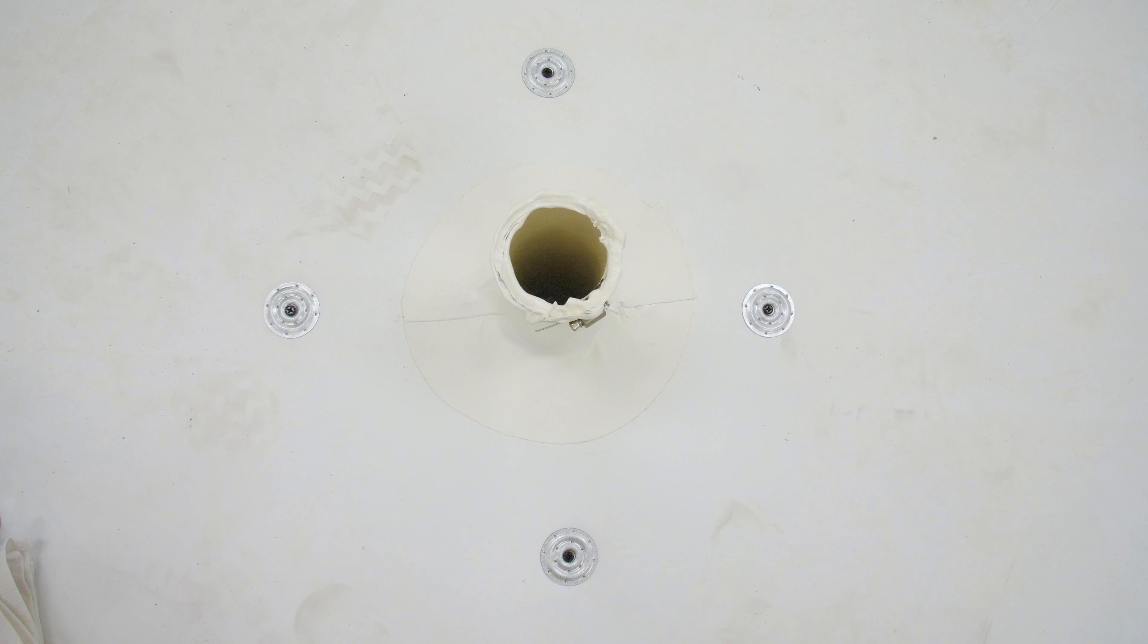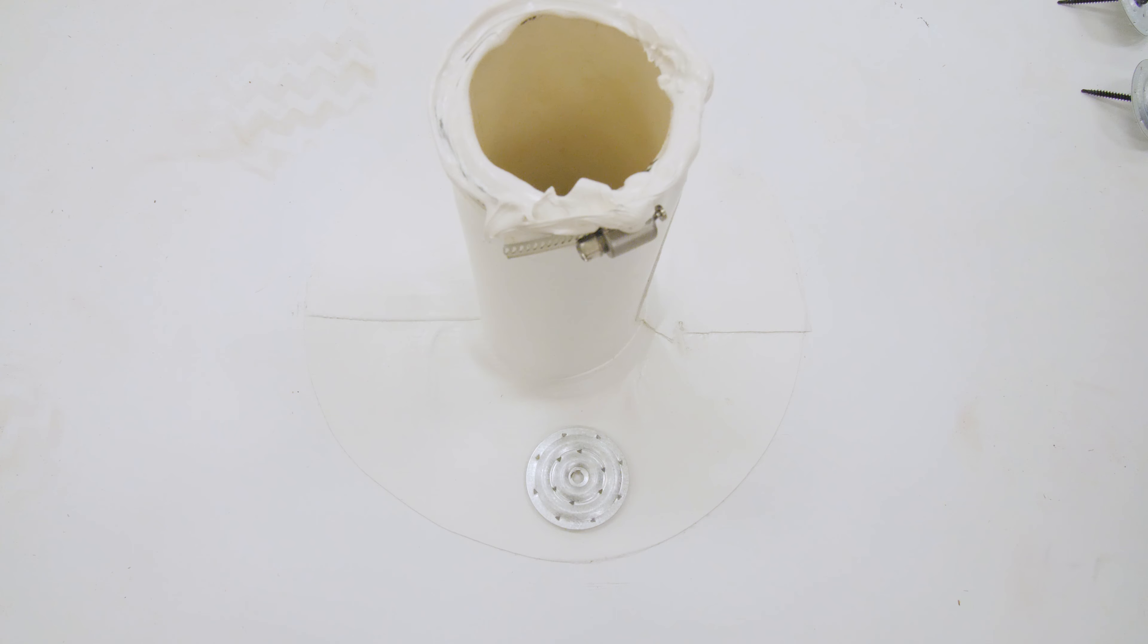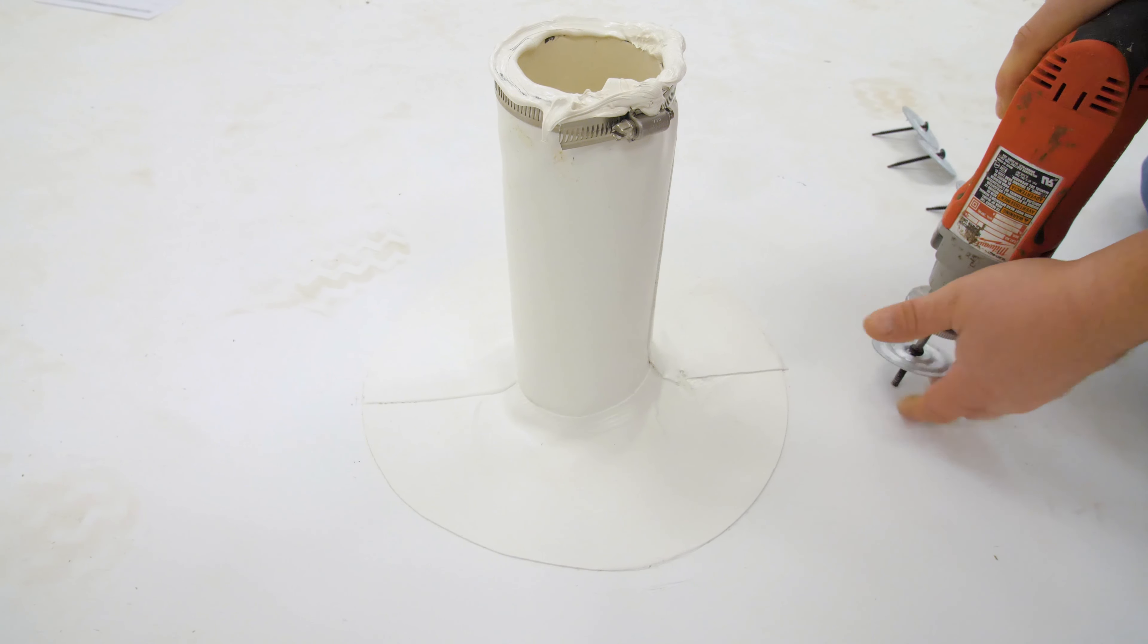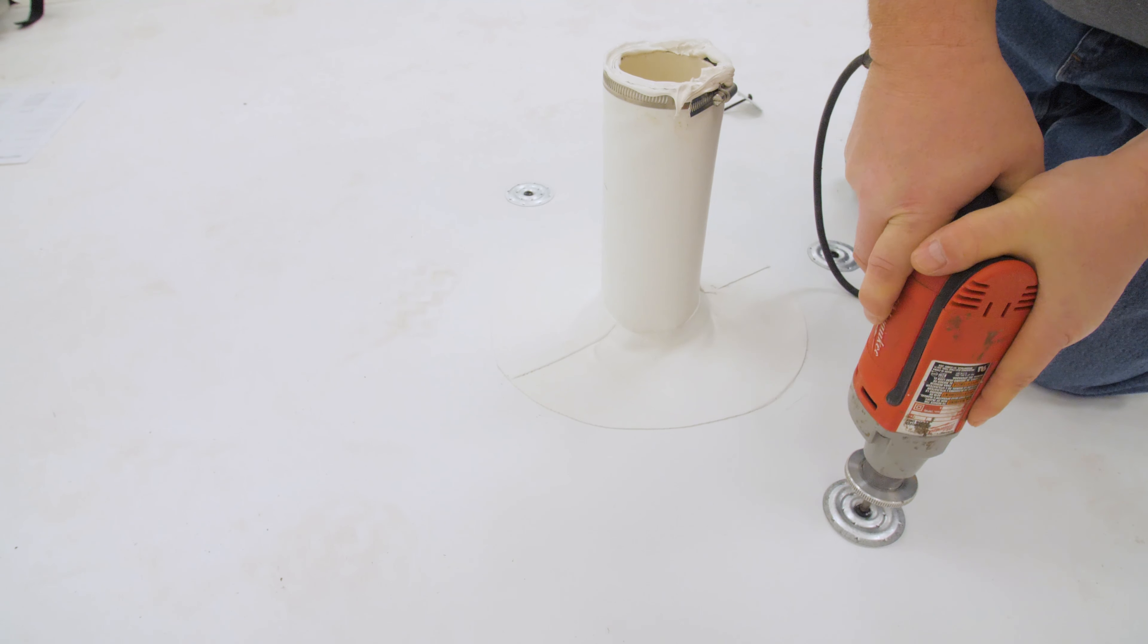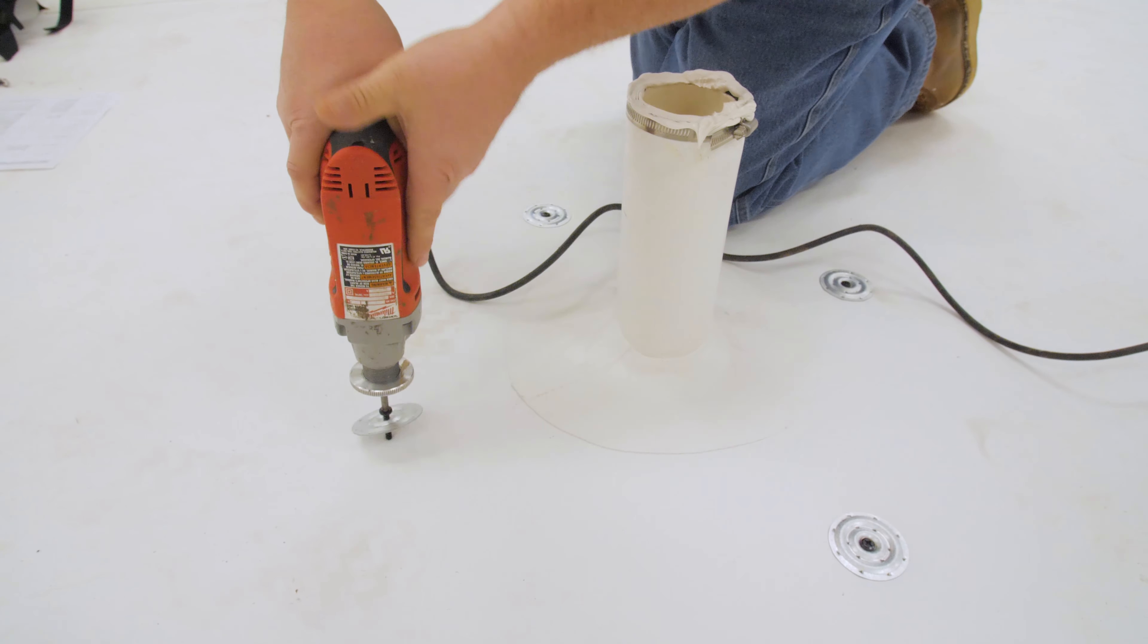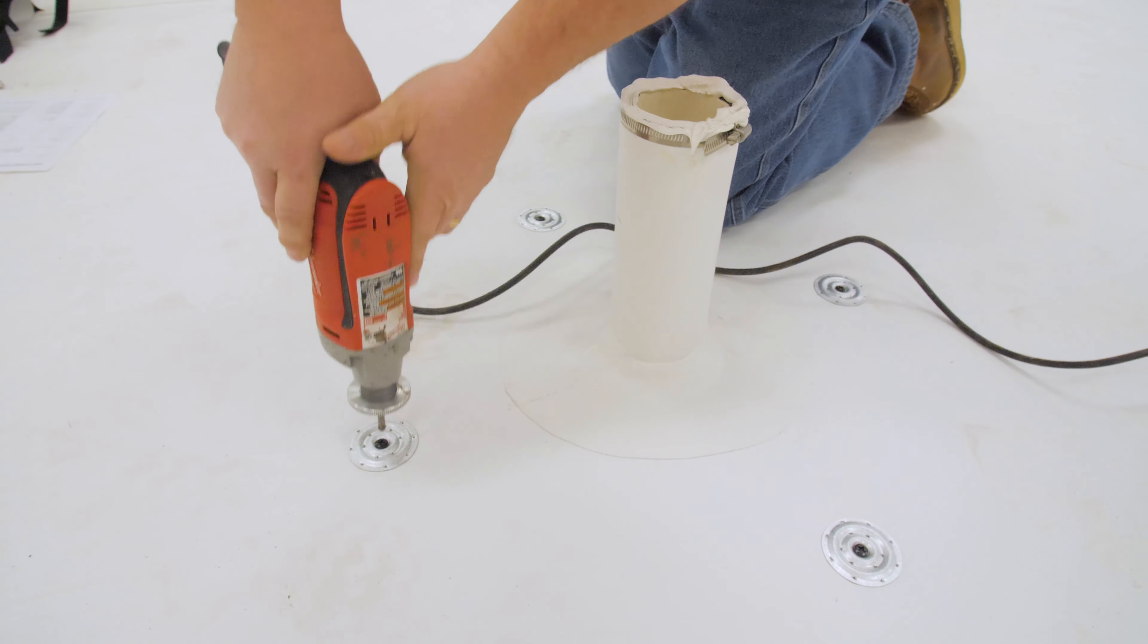Base attachment is required at all split pipe boots on mechanically attached systems. The base flange is not wide enough to allow installation of the plates and fasteners next to the pipe. Place four 2.4 inch seam plates and number 14 HDP or number 15 EHD fasteners beyond the base flange of the split pipe boot.